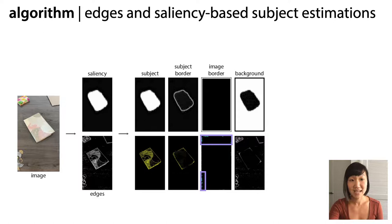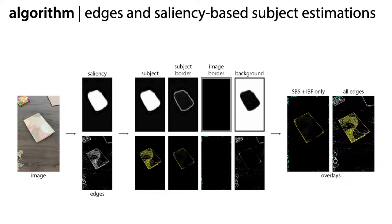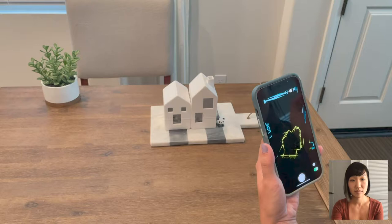Yellow designates edges within and around the subject, cyan for edges around the image border, and white for the remaining background edges. We merge these to form two edge-based overlays. The first shows all edges color-coded, and the second only shows relevant lines around the subject and image borders. We found in our survey that sometimes participants liked the extra context of the white lines, but other times it could be distracting. Here is the resulting tool in action.